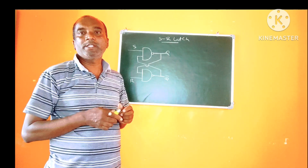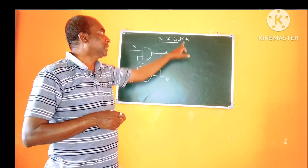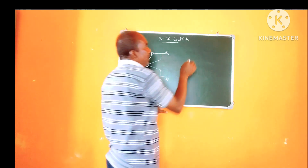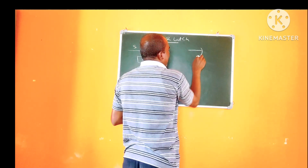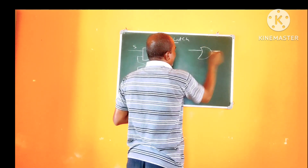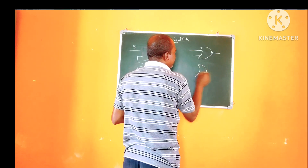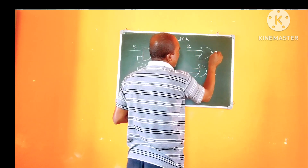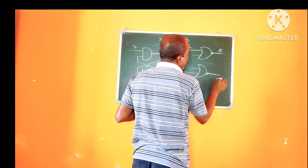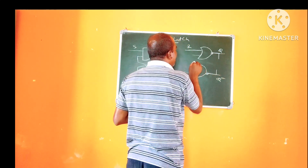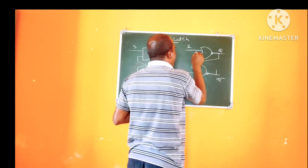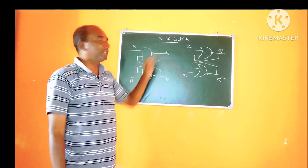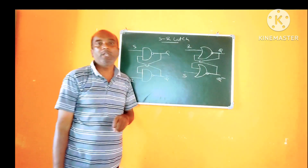The simple example for the latch is the SR flip-flop. This latch can be designed either by using the NAND gate or by using the NOR gate. It has a minimum of two inputs, R and S, and outputs Q and Q-bar. These outputs are cross-coupled to the inputs of the NOR gates. So we have the SR latch by using the NAND gate and by using the NOR gate.